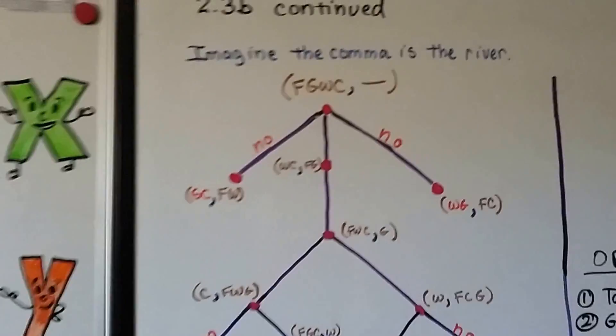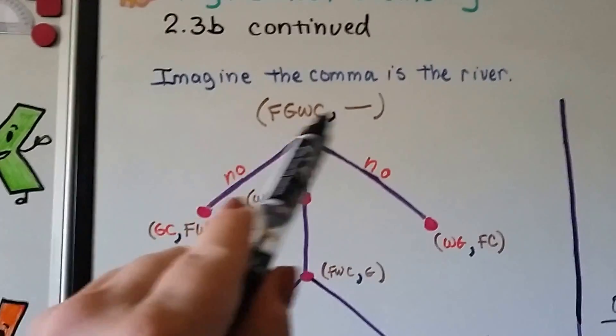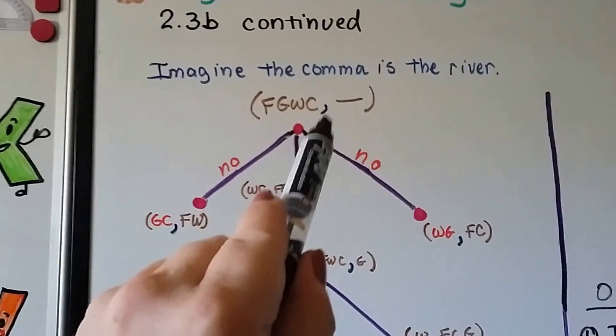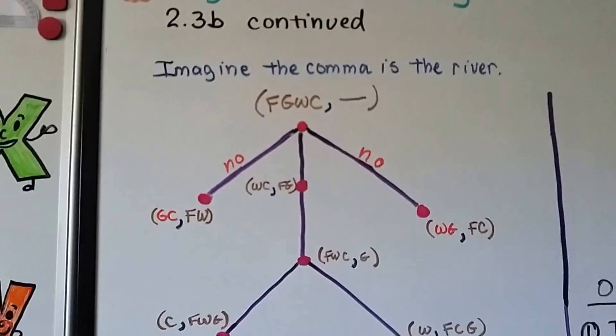I want you to imagine that the comma in this is the river. We have everybody on the left side of the river. We'll pretend the comma is the river and we need to get everyone on the right side.